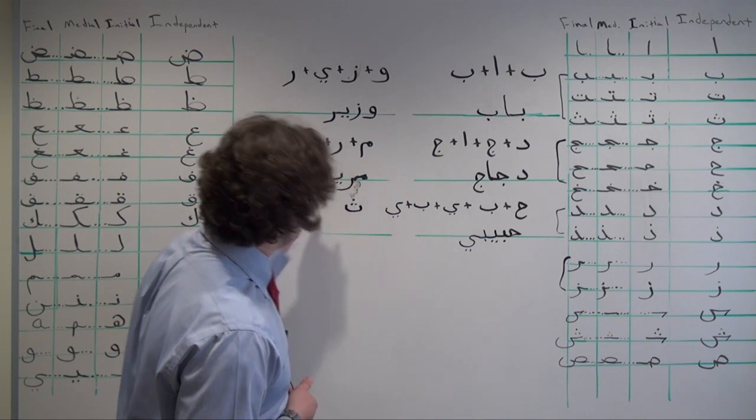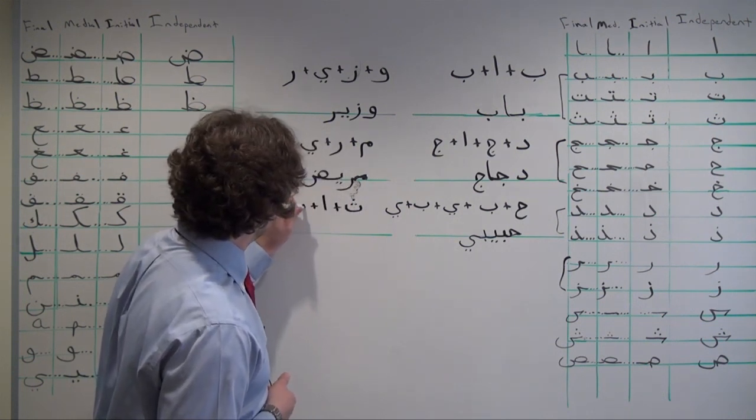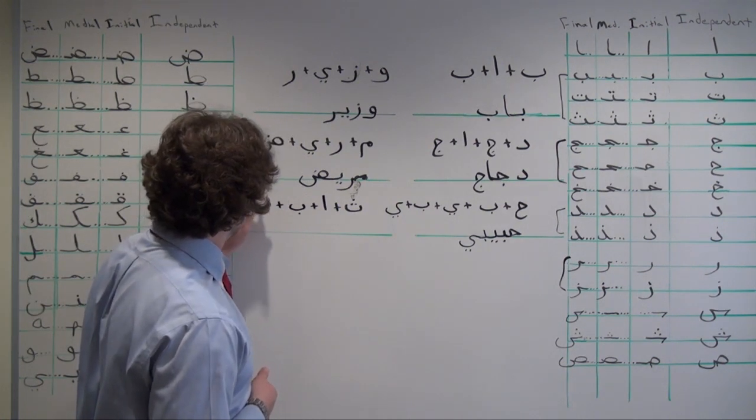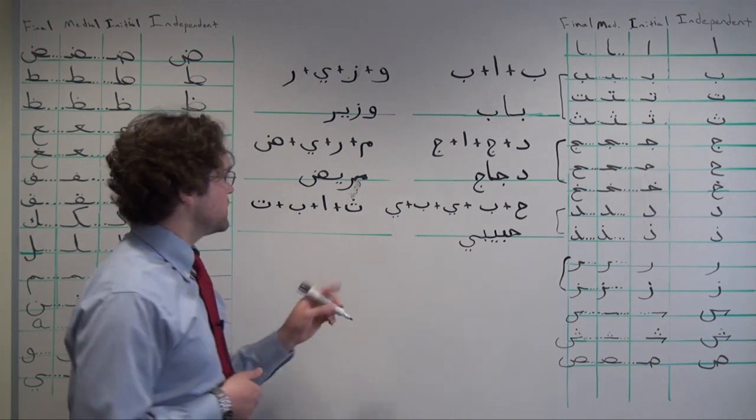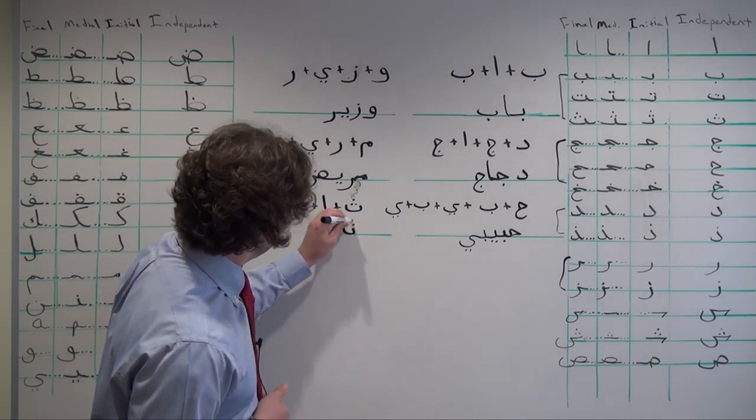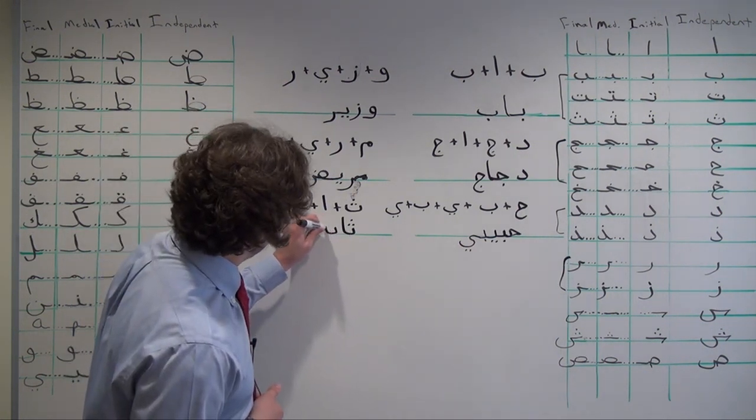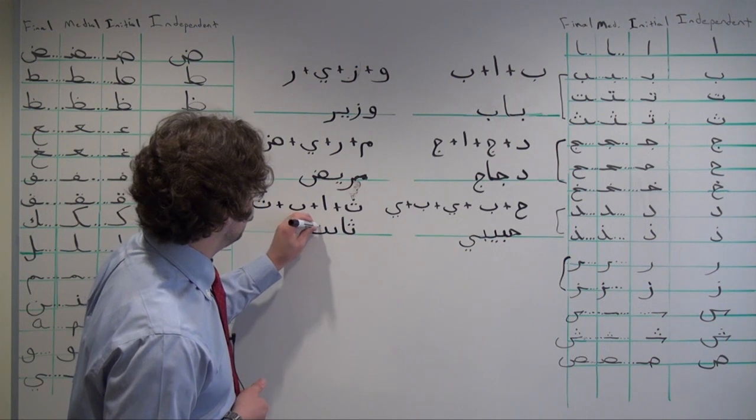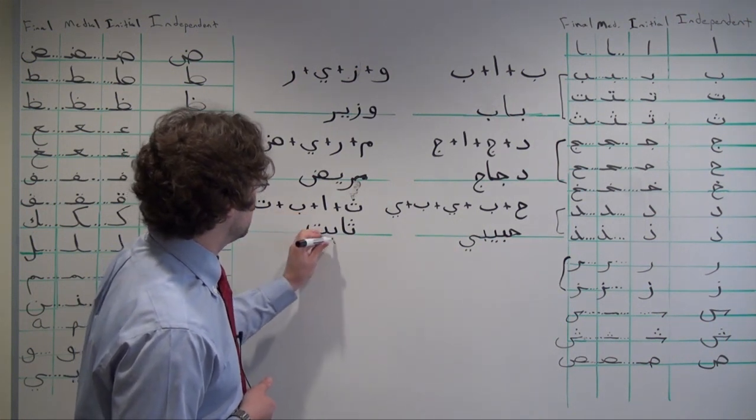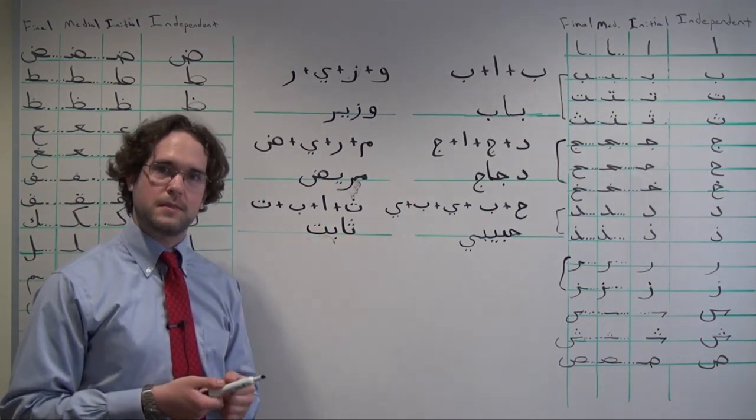Finally, tha, alif, ba, ta. Initial form of tha connects ta, alif, medial form, ba, and then final ta, which we notice has two teeth, not one. For the word ثابت, which means stable in Arabic.